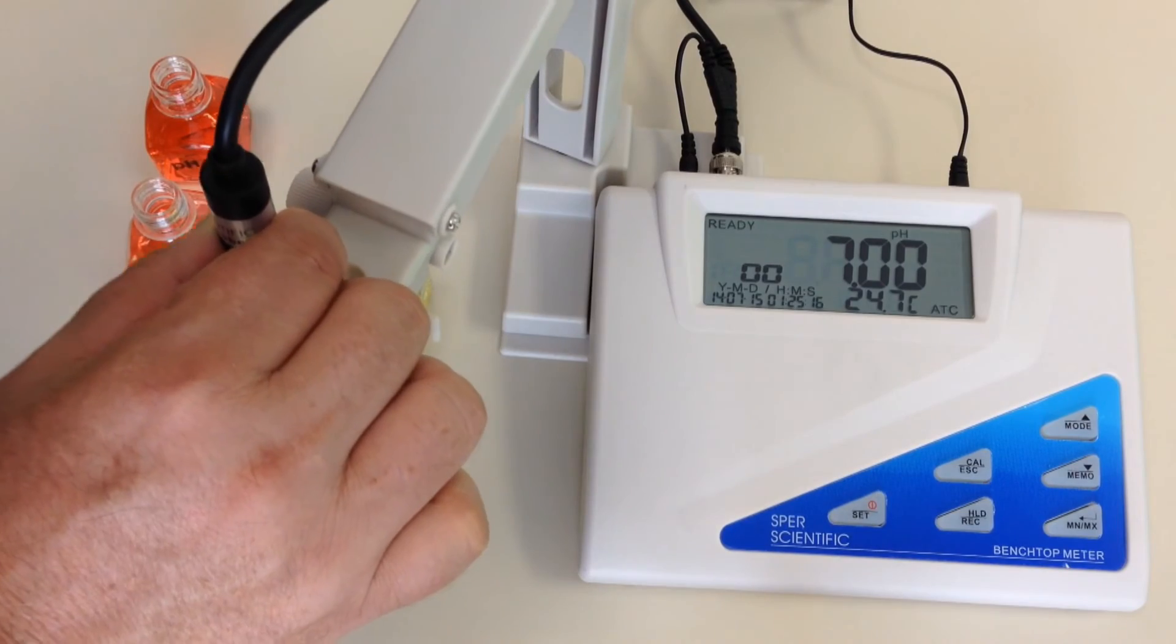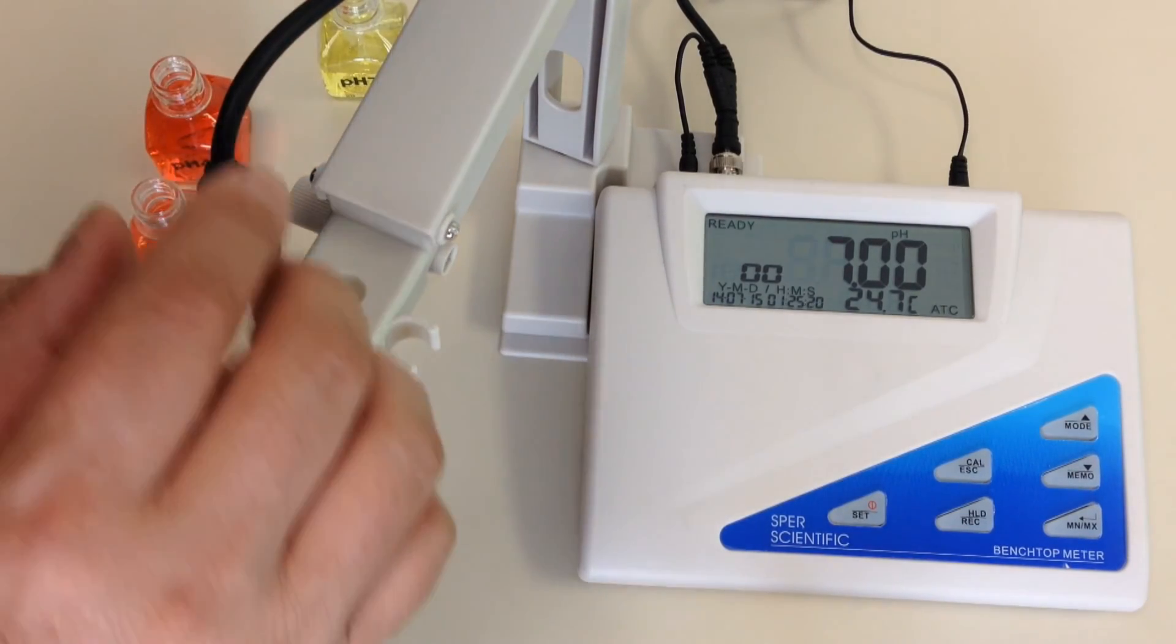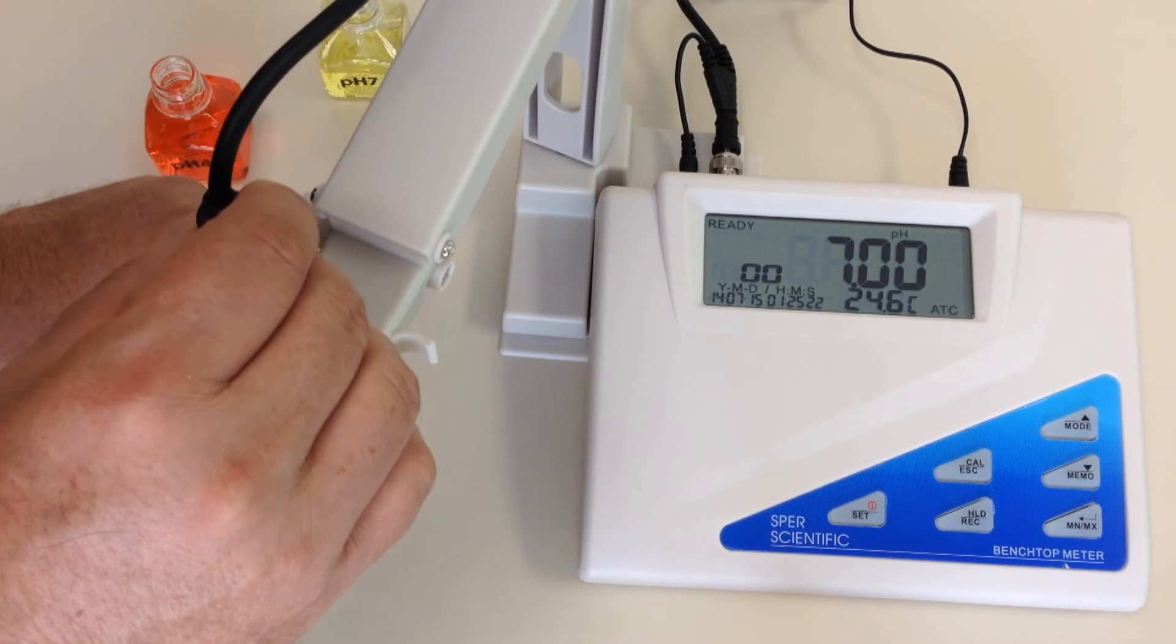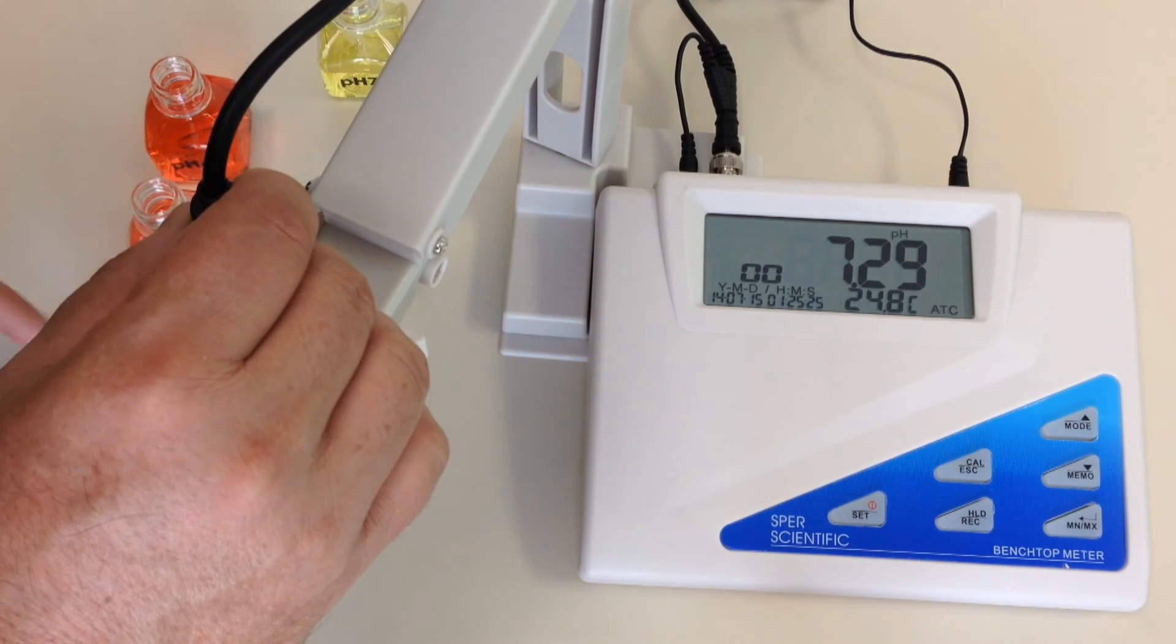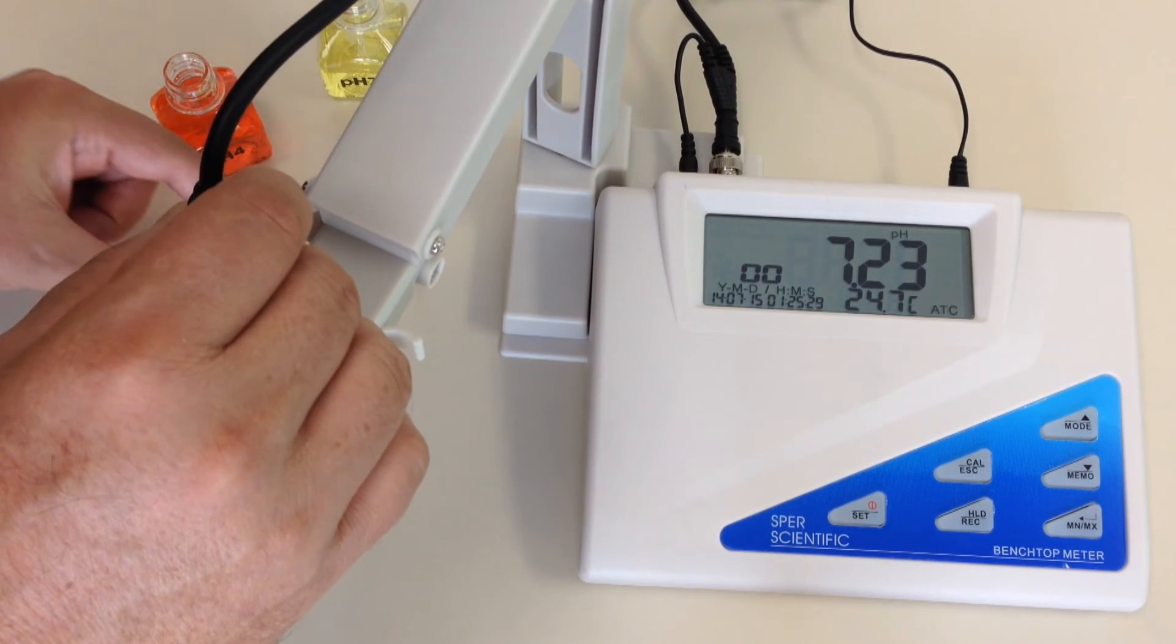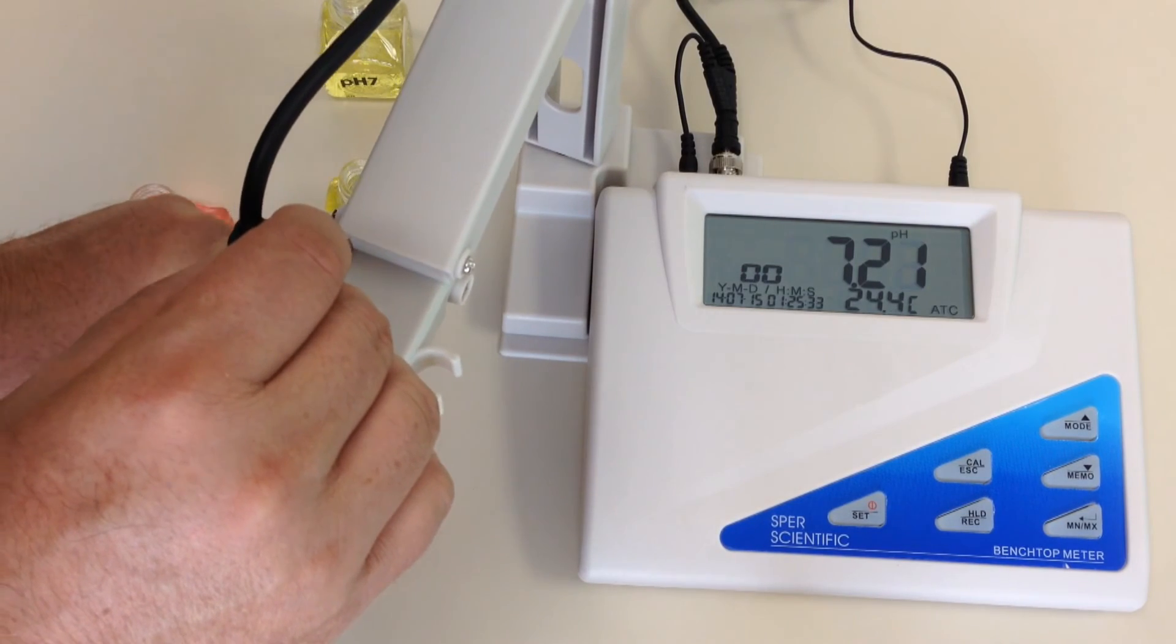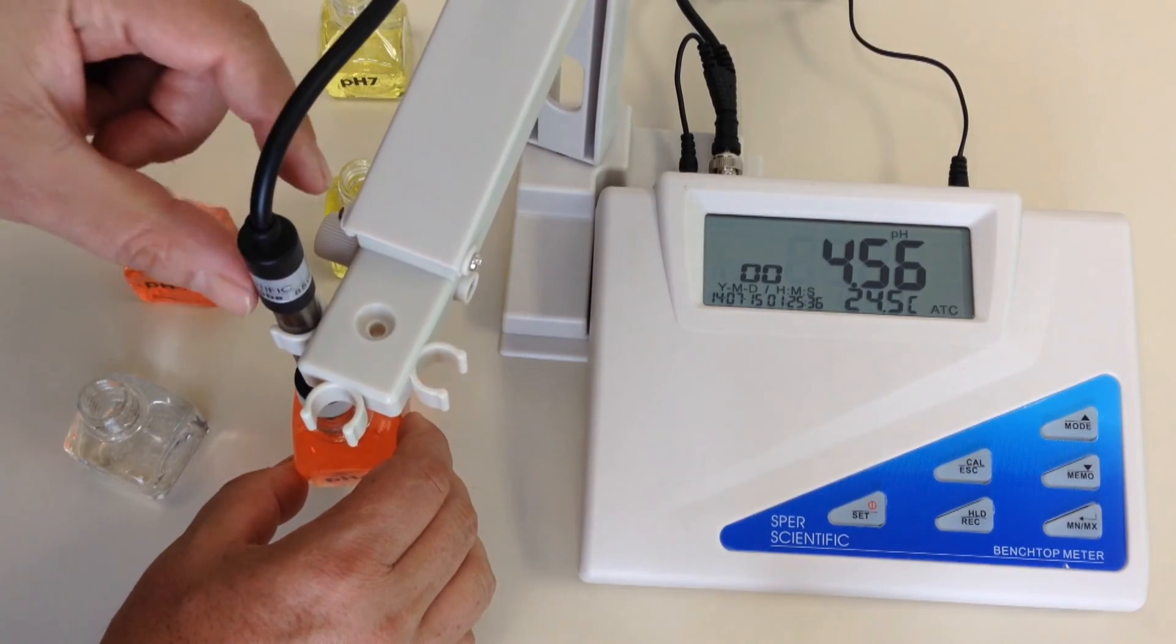So I am going to take this out, move my two solutions off to the side, going to clean off my probe using distilled water, going to put it inside the first pH 4, and now the actual solution that I am going to be calibrating.